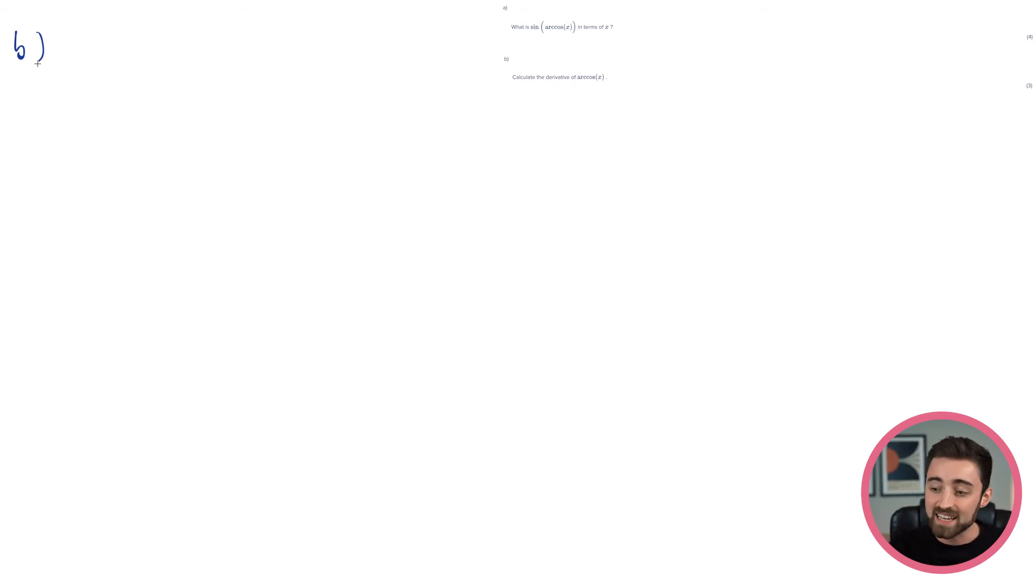So I think the second part is going to be something relatively simple, and it looks like it's talking about derivatives. So it says, calculate the derivative of arc cos of x. Okay, so this is another little trick. As it stands, we don't know how to differentiate inverse trig functions, but we do know how to differentiate normal trig functions. Like, I know how to differentiate cos, I know how to differentiate sine, etc.